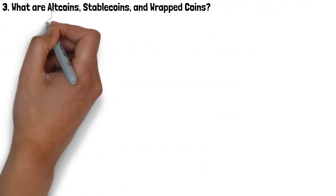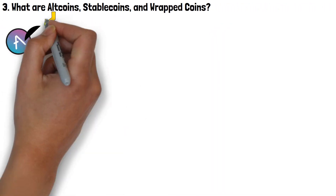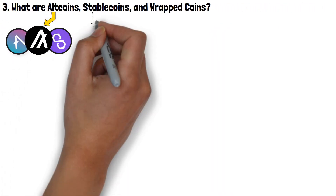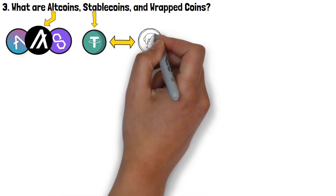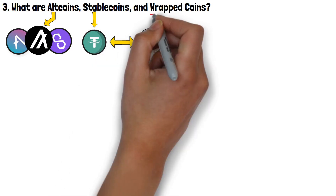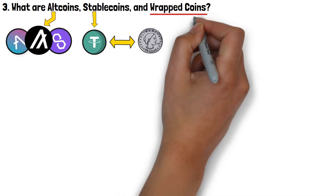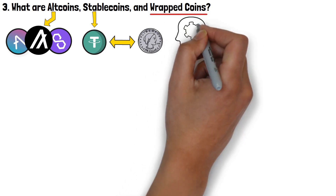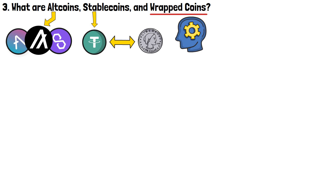So, altcoins are all cryptocurrencies that are not Bitcoin, while stablecoins are special crypto assets that have their price pegged to a traditional currency, often the US dollar. What are wrapped coins, though? To tell you the truth, wrapped coins are probably the most difficult to understand if you're just starting out with crypto.